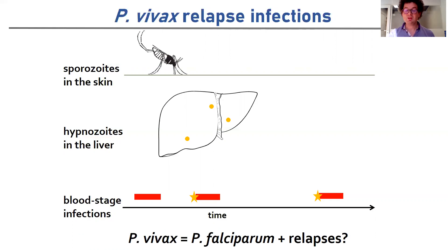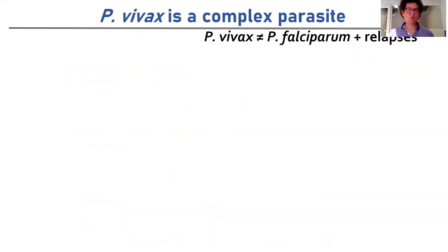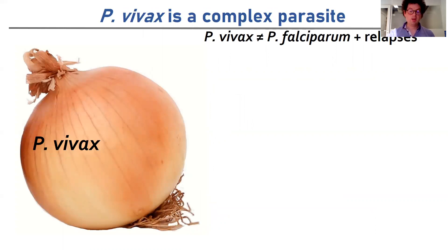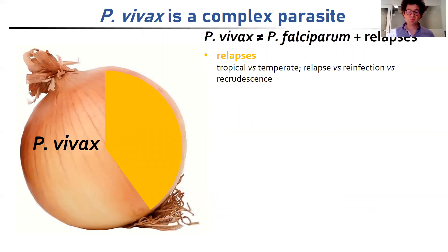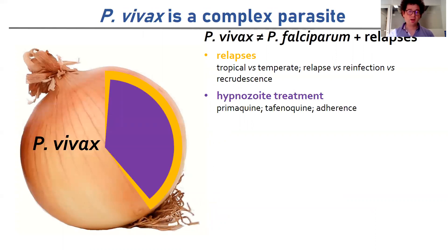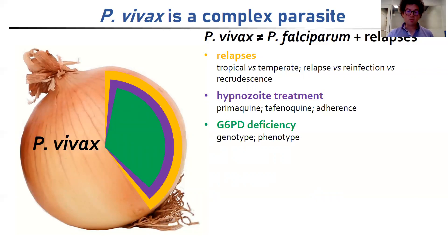When modeling vivax it's tempting to think that it's just like falciparum with the addition of relapses, but the reality is more complex because vivax is a complex parasite. When thinking about the complexity of vivax I like to think of it as an onion. When we peel away the first layer of complexity we see the issue of relapses. Peeling away another layer we have the problem of hypnozoites and how to treat them with the only available drugs, primaquine or tafenoquine. However, peeling away another level we have the challenge of G6PD deficiency, an inherited blood disorder.